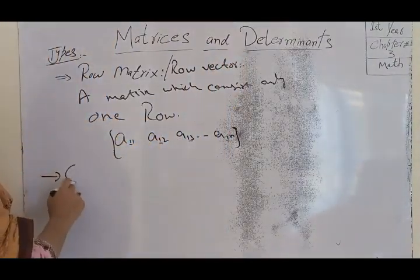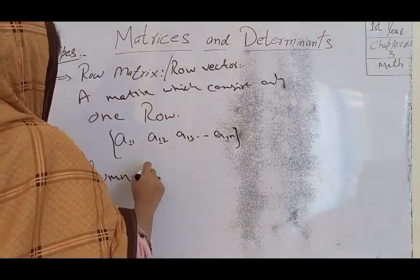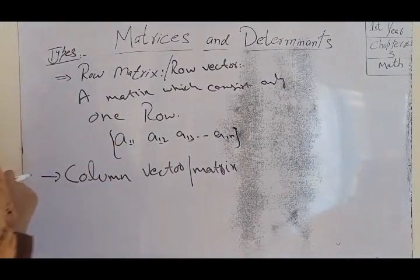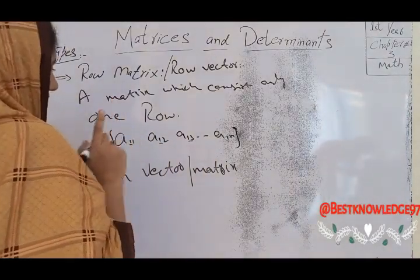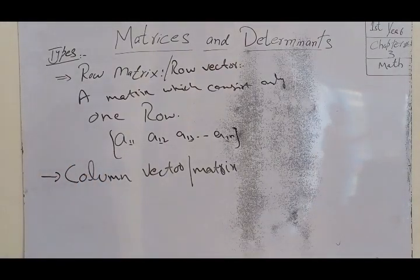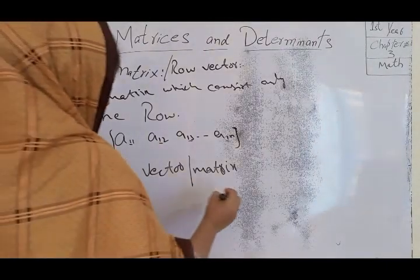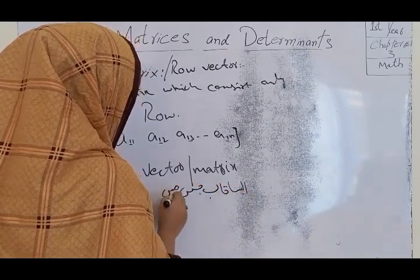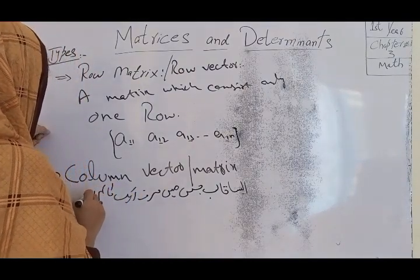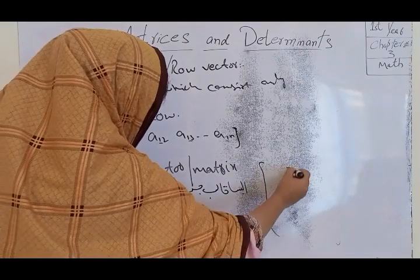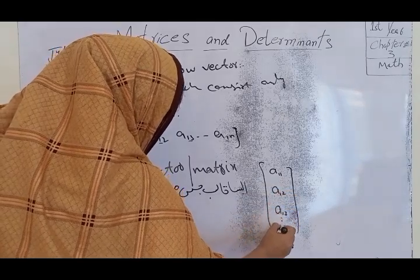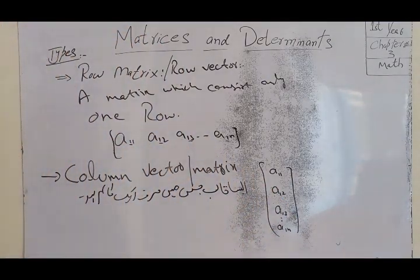In the same way, we have a column vector or column matrix. A column matrix has only one column. It is also called a column vector.